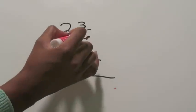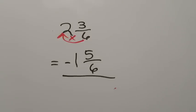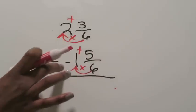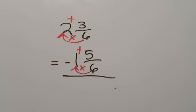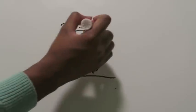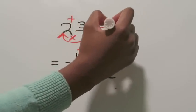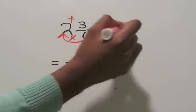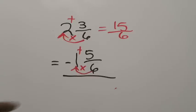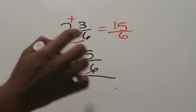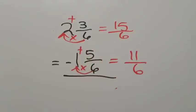For the other fraction, two times three is six, so whatever happens to the denominator must happen to the numerator — two and a half becomes two and three sixths. Now I'm dealing with two and three sixths minus one and five sixths. You can't subtract five from three, so I'll convert both to improper fractions. To convert a mixed number: multiply the denominator by the whole number, then add the numerator. Six times two is 12, plus three equals 15 — so two and three sixths is 15 over six. Six times one is six, plus five equals 11 — so one and five sixths is 11 over six.